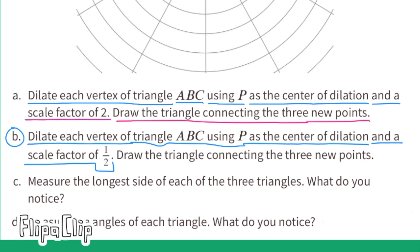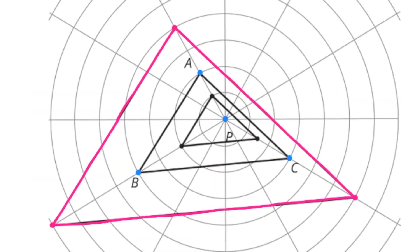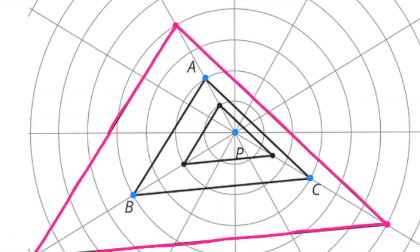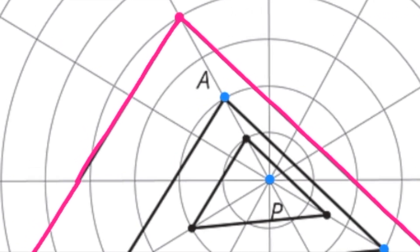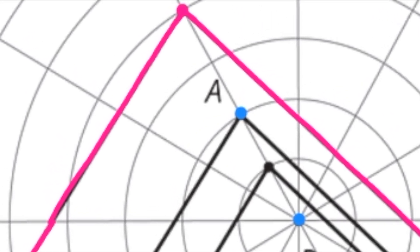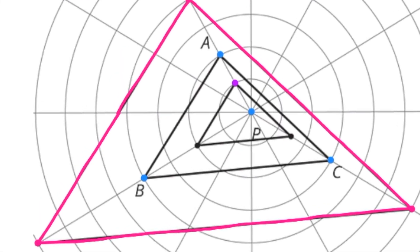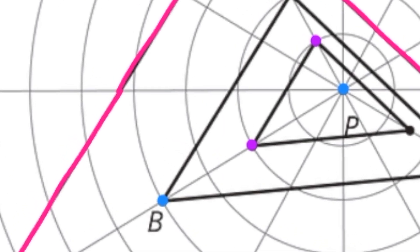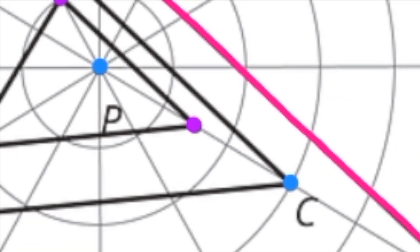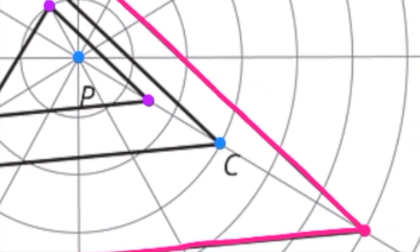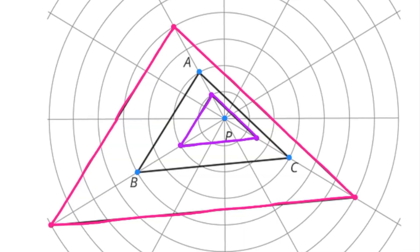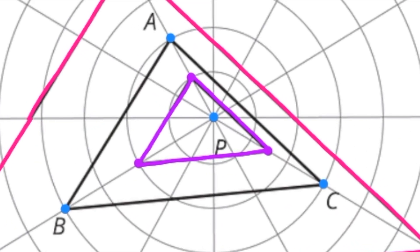Part B: Dilate each vertex of triangle ABC using P as the center of dilation and a scale factor of one half. This triangle has a scale factor of one half, so start at center point P and go halfway to point A for the first point, then halfway to point B for the second point, and halfway to point C for the third point. Draw the triangle connecting the three new points.